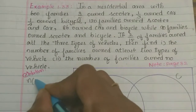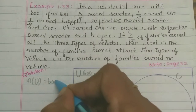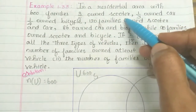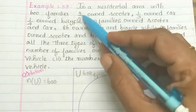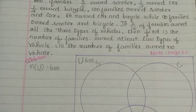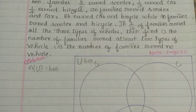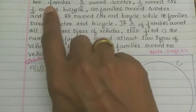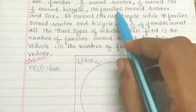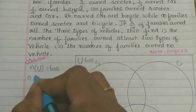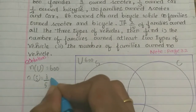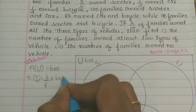n of U is equal to 600. 3 by 5 owned scooter. Number of persons using scooter is equal to 3 by 5 of 600. That is 3 into 120, which equals 360 families using scooter.